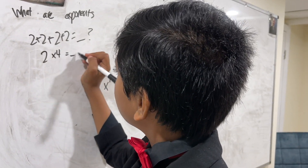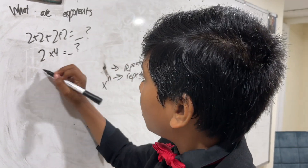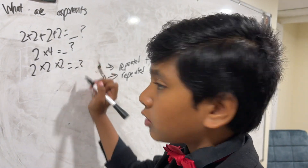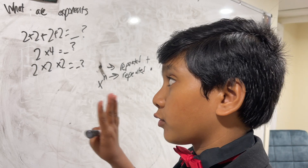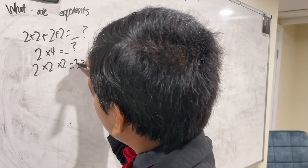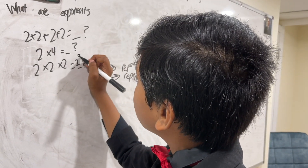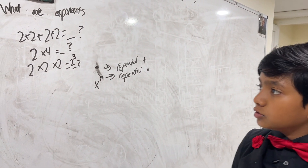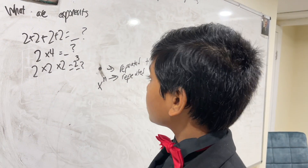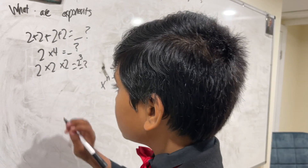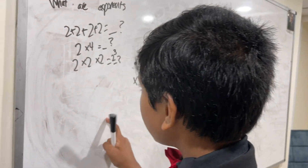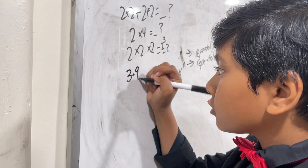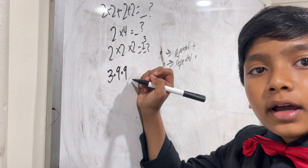So two times four becomes two times two times two — we're multiplying something by itself three times. That thing is two, and we multiplied it by itself three times, so it gives us two to the third power.